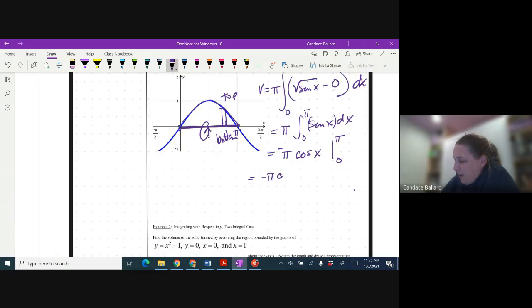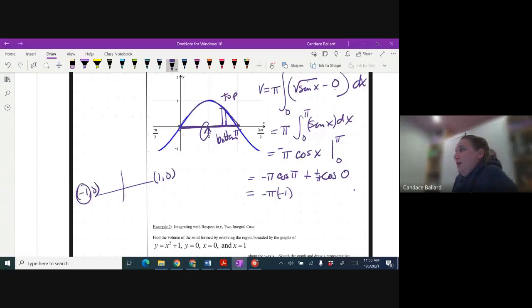The integral of sine is negative cosine. So I got to go from zero to pie and remember with trig, we got to be careful with those zeros. So we got negative pie cosine of pie minus negative pie cosine of zero. Why is the pie negative? So let me tell you why the pie is negative because when we integrated sine, we got negative cosine.